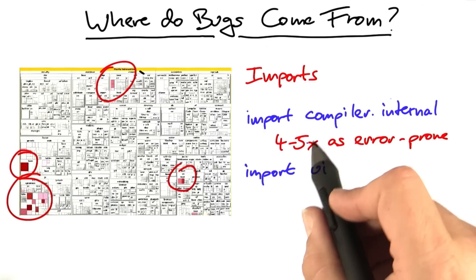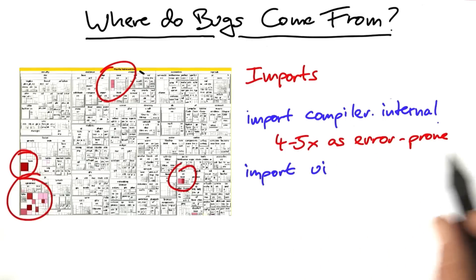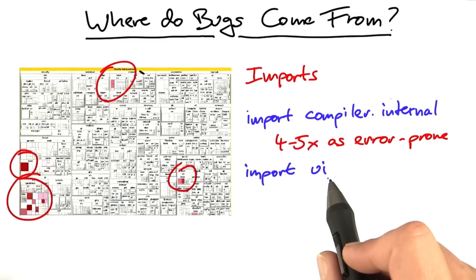And all of these are reasons why this domain, namely the compiler, is way more error-prone than the user interface.